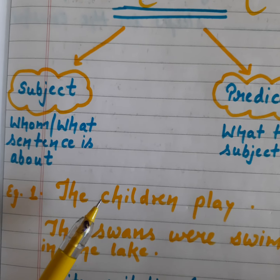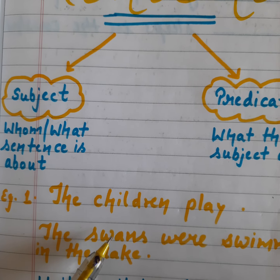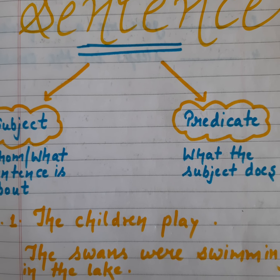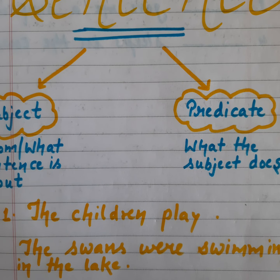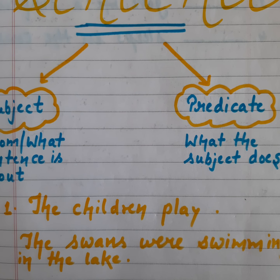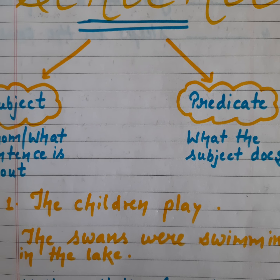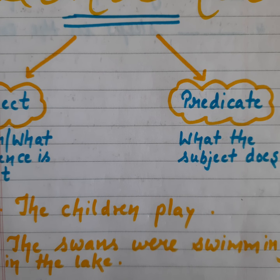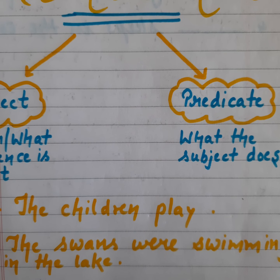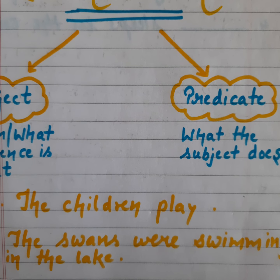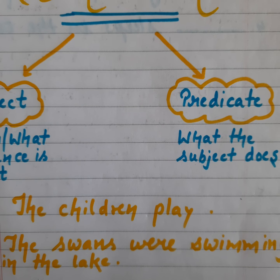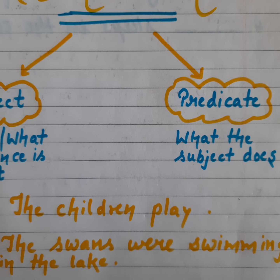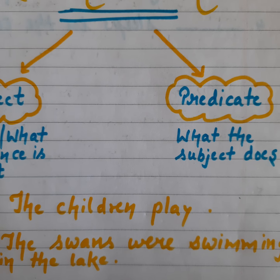Now let's come directly to the examples, because there is not much more to explain about subject and predicate. Simply, the part of a sentence that tells us about what and whom is called subject, and the part that tells us what the subject is doing is called predicate.